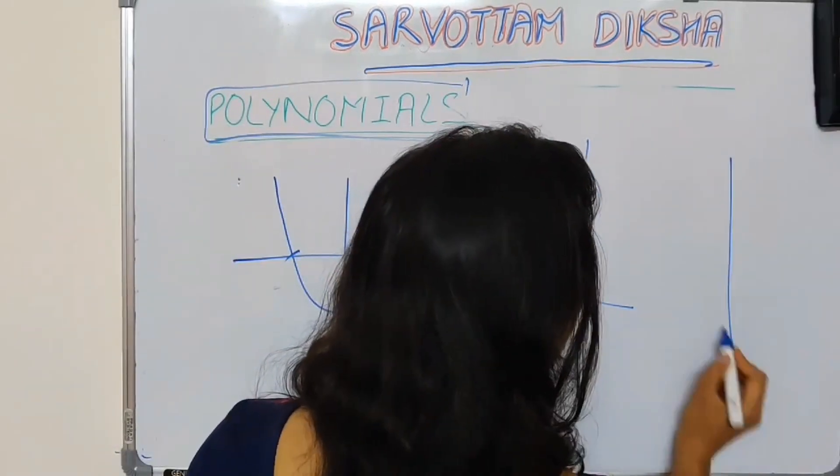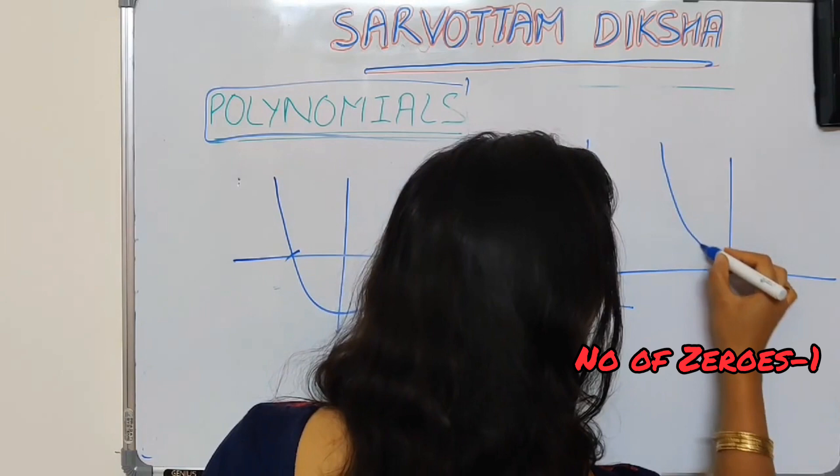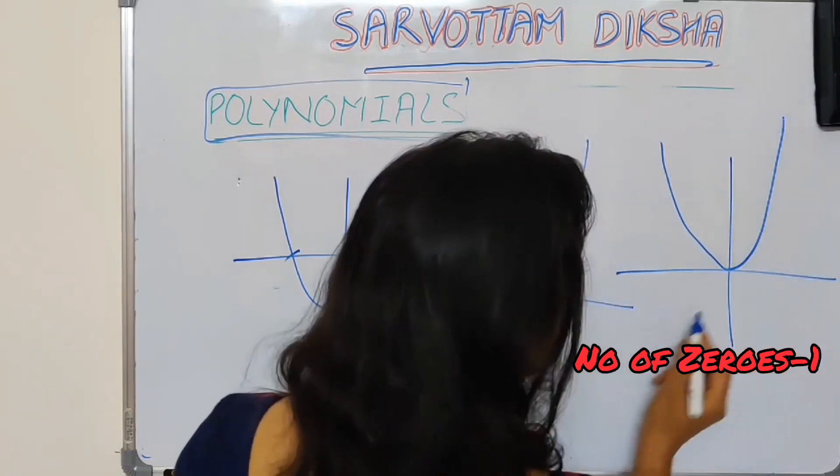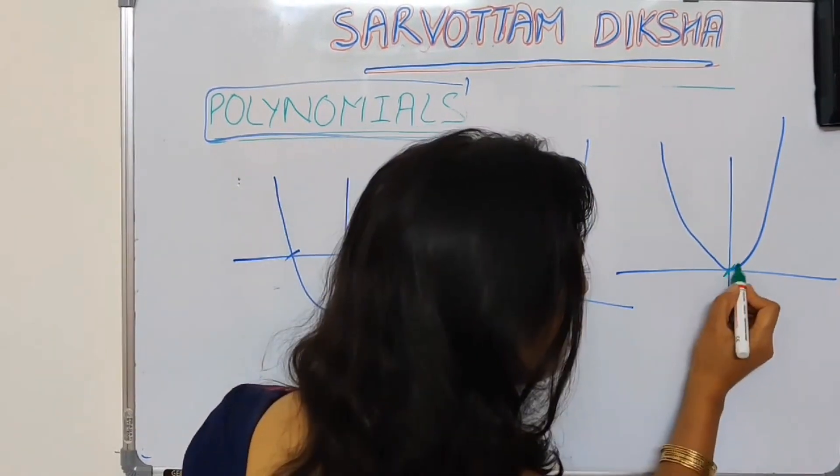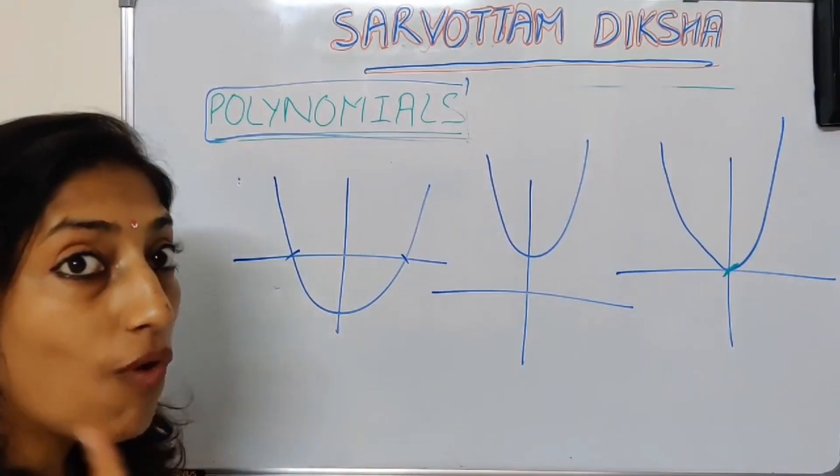It is also possible that we will have only 1 zero. That is, my turning point is touching x axis, so I am having only 1 zero.